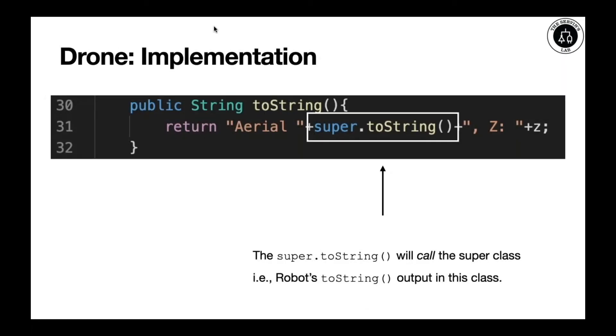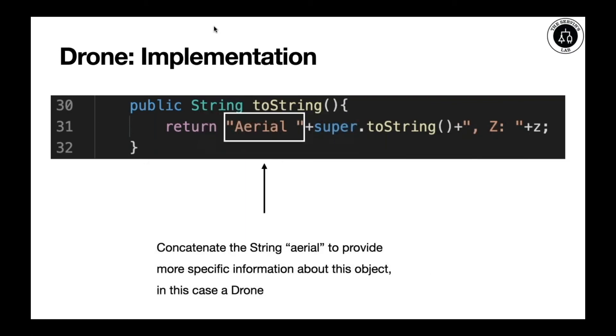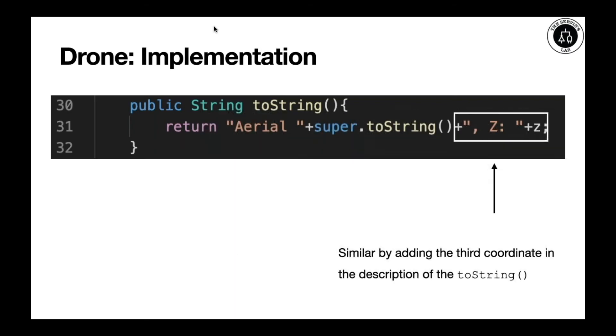Here, we're invoking our ancestor, in this case our parent robot. Super.toString will call the superclass from robot and will give us the output that we expect. We use the power of concatenation to make this toString unique. That's why we provide Aerial to provide feedback that we're dealing with the drone. Finally, we concatenate also the Z coordinate to whatever the toString from our ancestor will be.